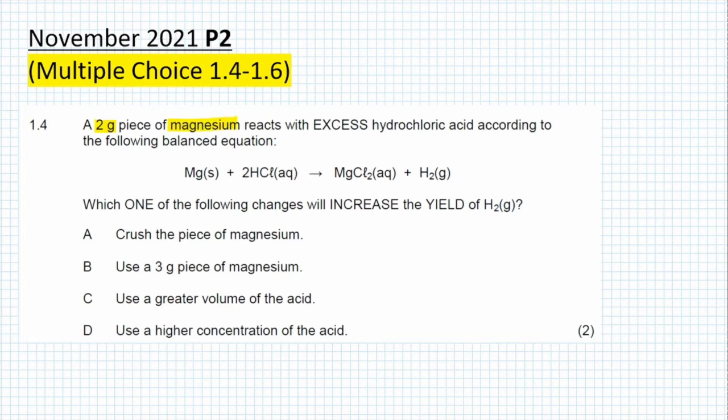Question 1.4 says a 2 gram piece of magnesium reacts with excess hydrochloric acid according to the following balanced equation: Mg(s) + 2HCl(aq) → MgCl₂(aq) + H₂(g). Which one of the following changes will increase the yield of hydrogen gas?